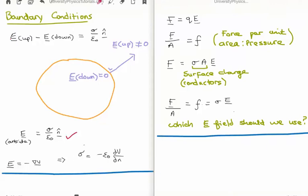We also know that the electric field is equal to minus the gradient of the electric potential, which means the surface charge is equal to minus epsilon zero del V del n. We know that the electric force F is equal to the charge multiplied by the electric field. Dividing across by unit area gives the force per unit area, which is of course a pressure — I'll give it the placeholder small f. Since the surface charge equals sigma times the area, the force per unit area equals sigma times E.